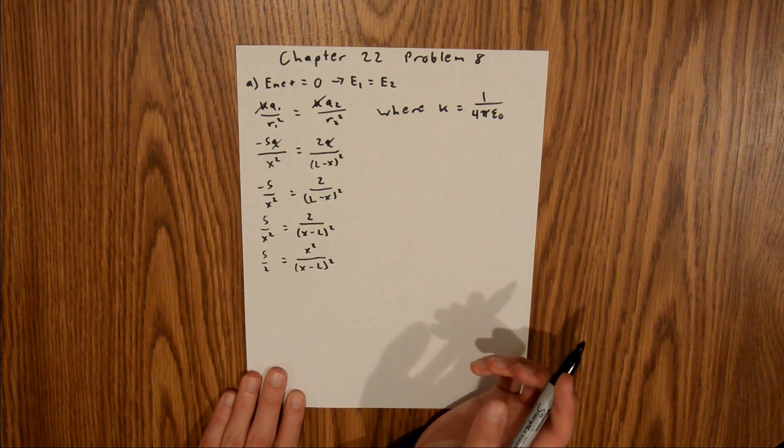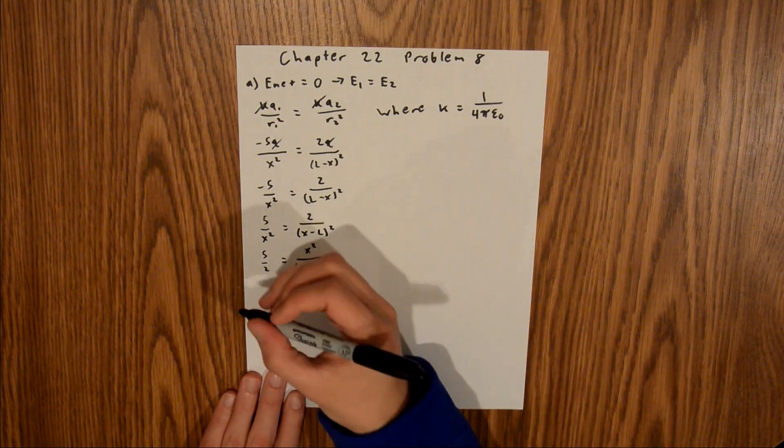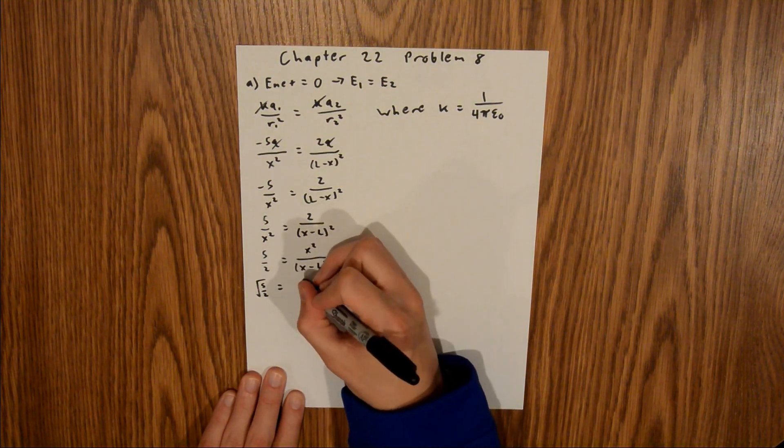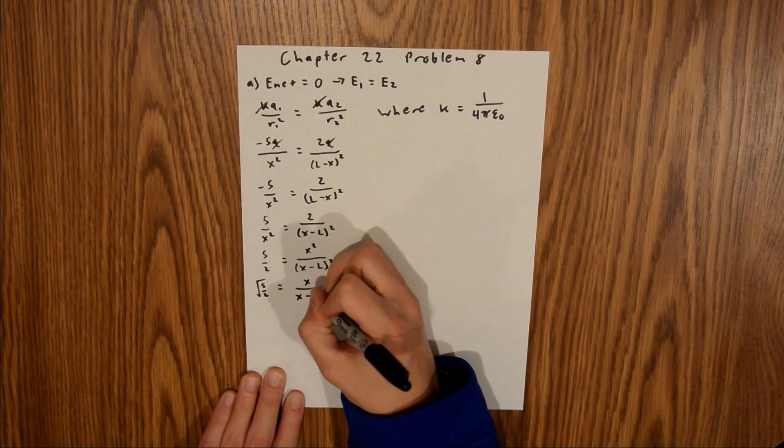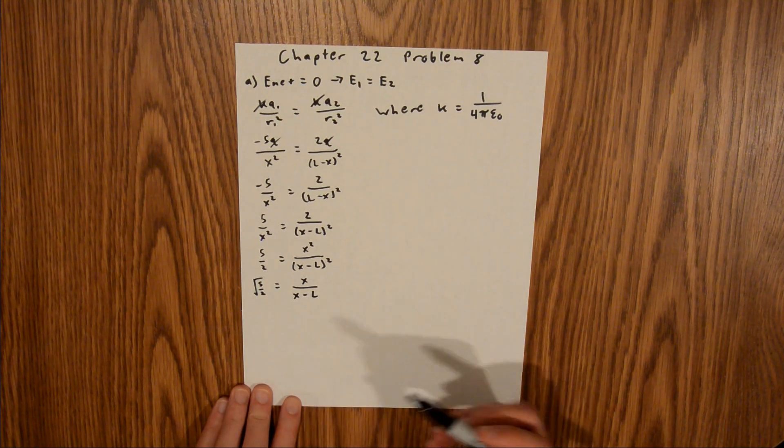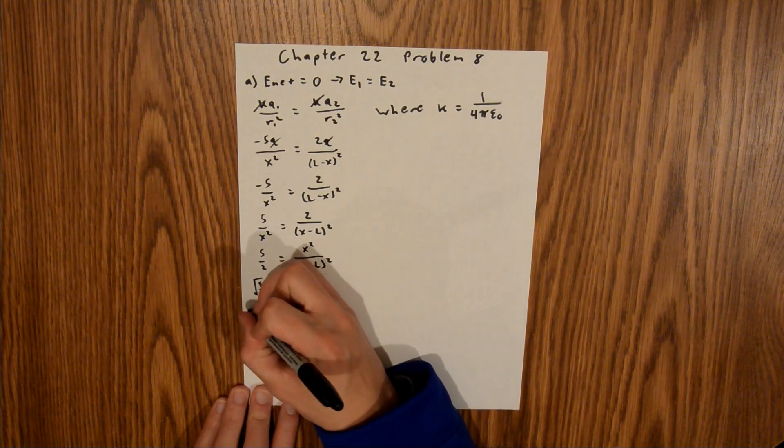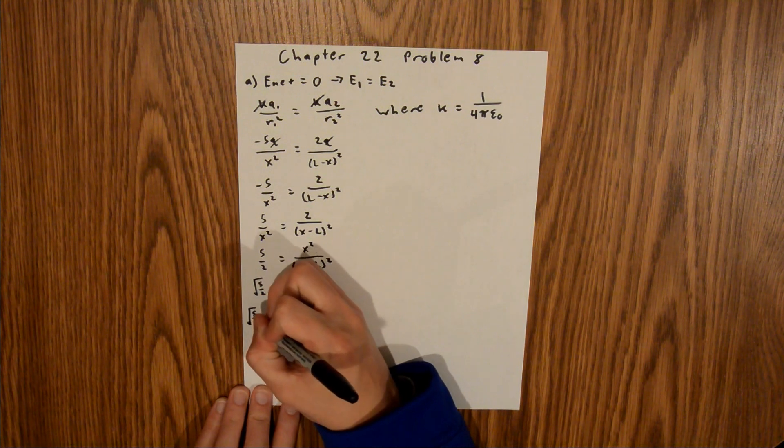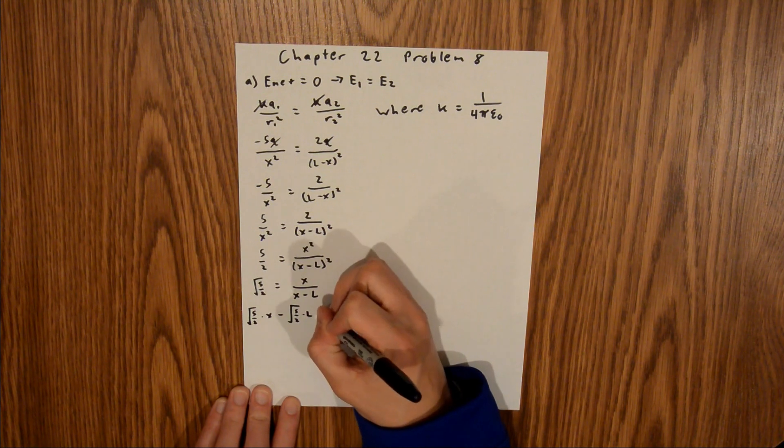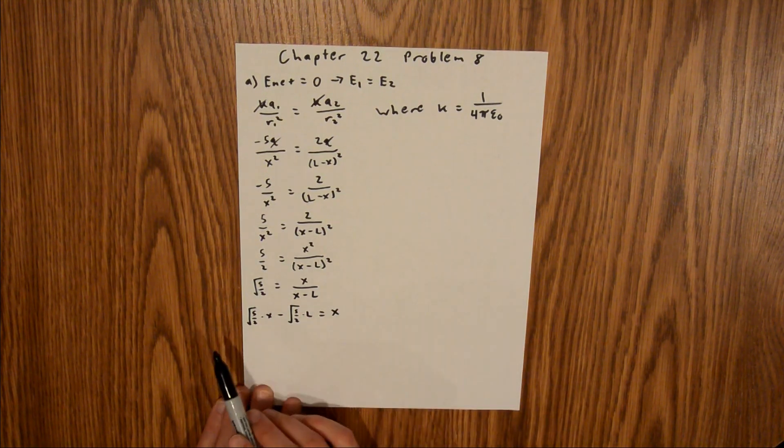And so if we take the square root of both sides, we get the square root of 5 over 2 is equal to x over x minus l. And so now we can multiply both sides by x minus l, and this is going to leave us with the square root of 5 over 2 times x minus the square root of 5 over 2 times l is equal to x.